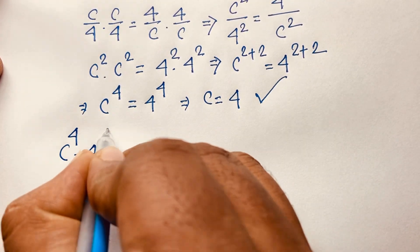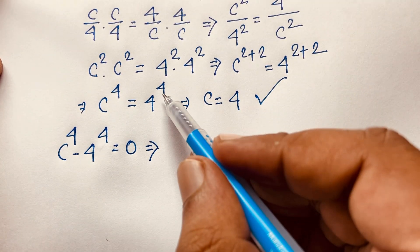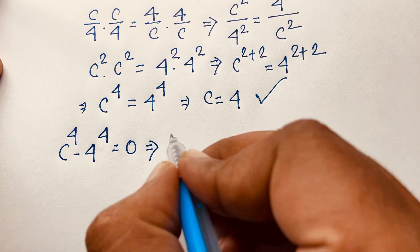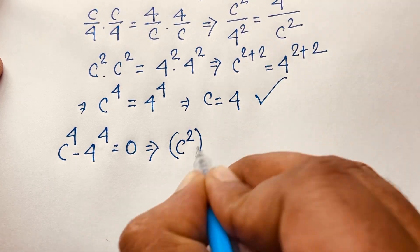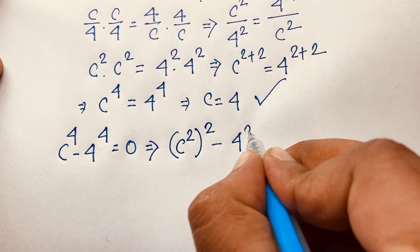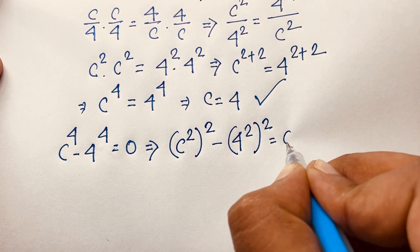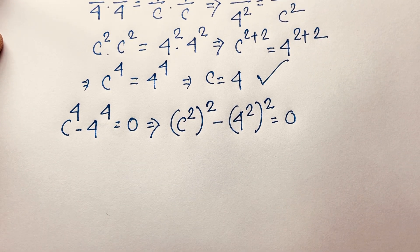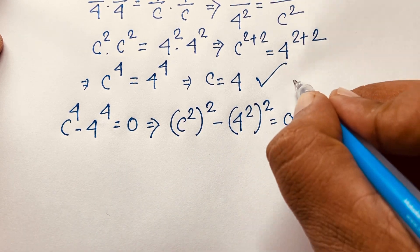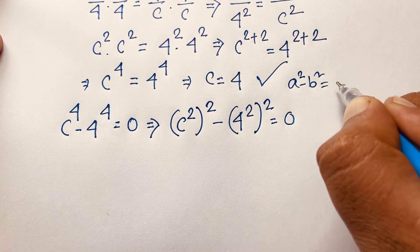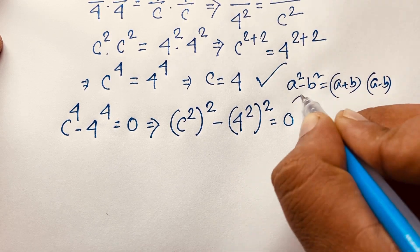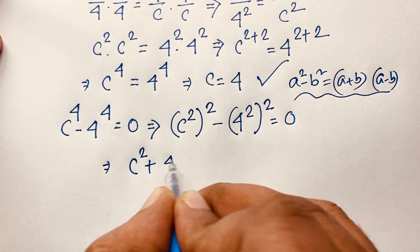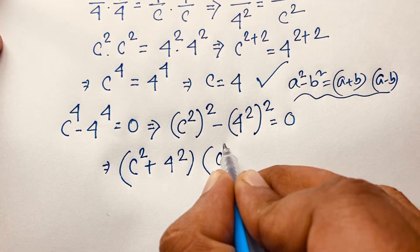At this moment we can write the expression as c to the power 4 minus 4 to the power 4 is equal to 0, by moving the right-hand side over. Now c to the power 4 can be written as (c squared) squared, and 4 to the power 4 as (4 squared) squared, equals 0. You can see the pattern a squared minus b squared, which factors as (a plus b)(a minus b).